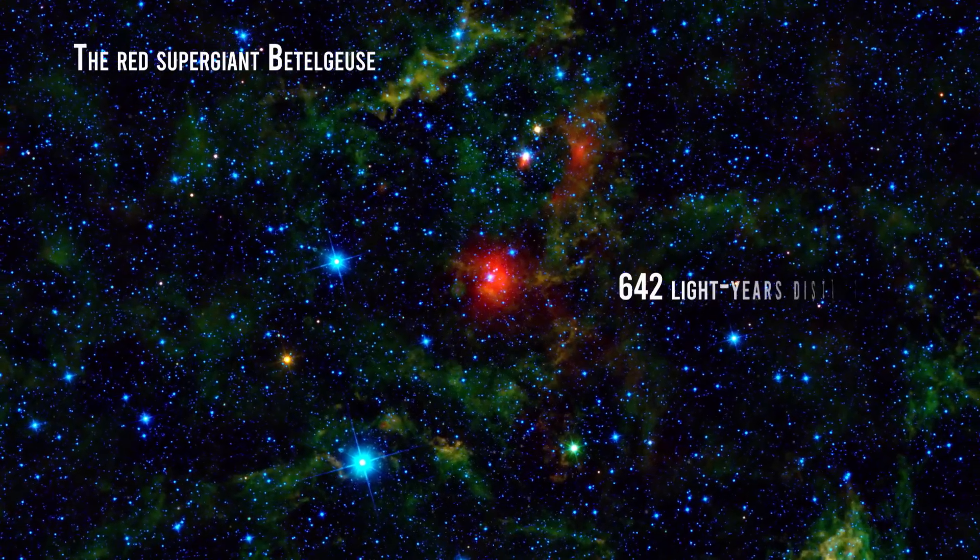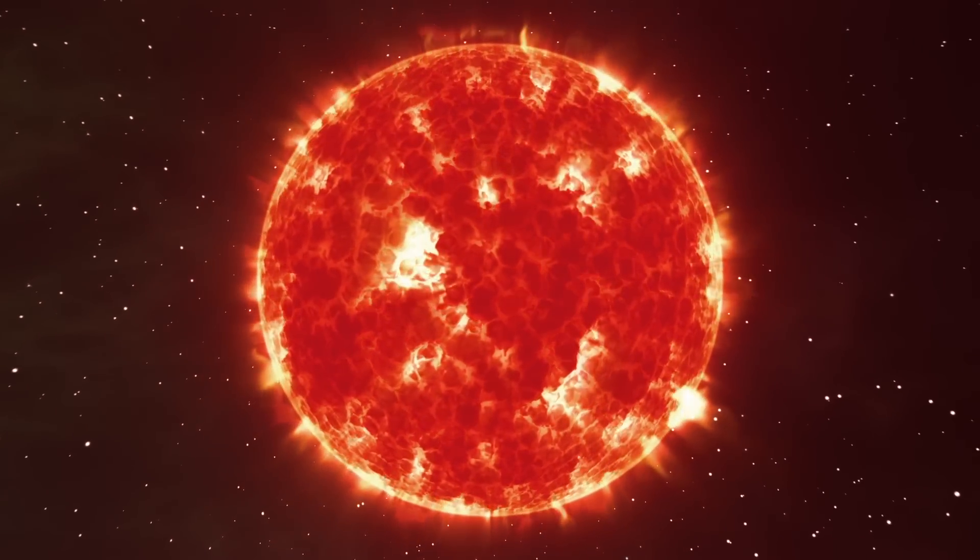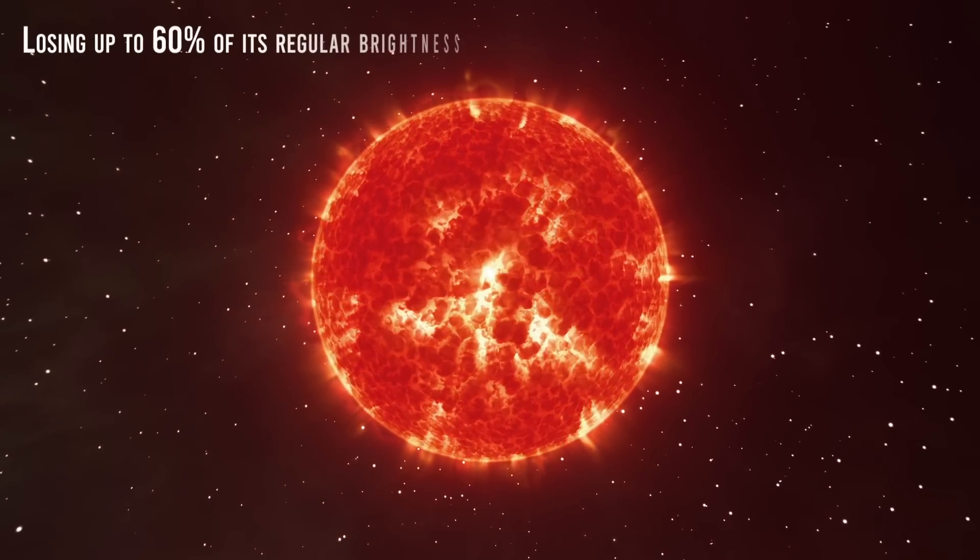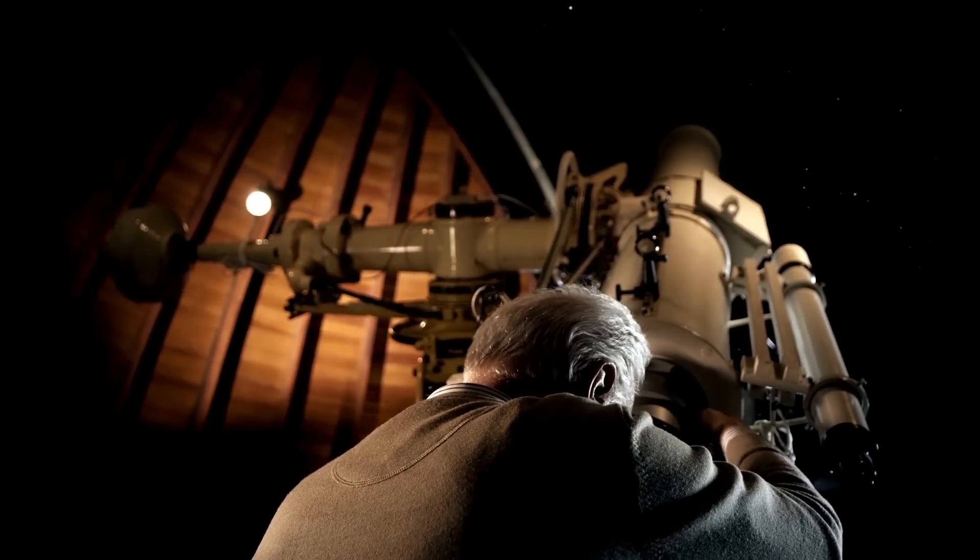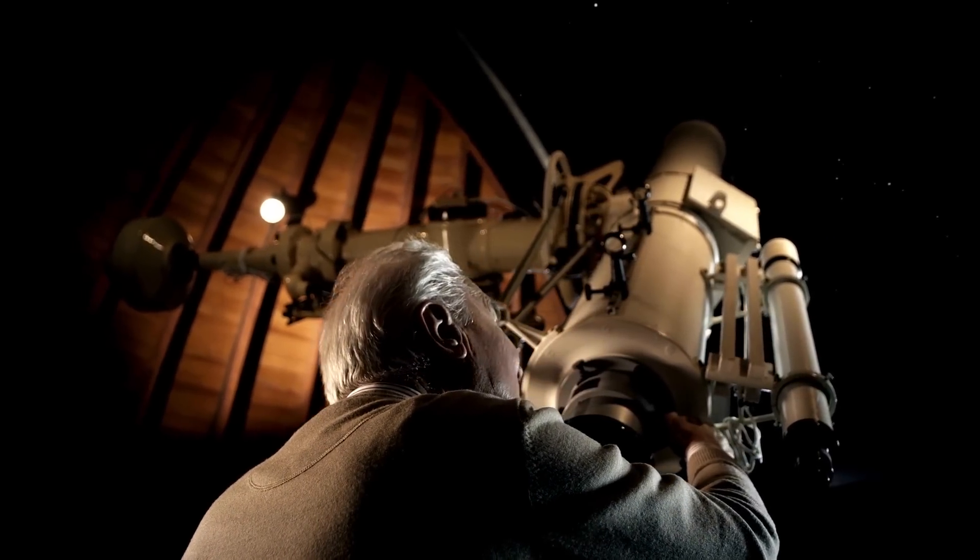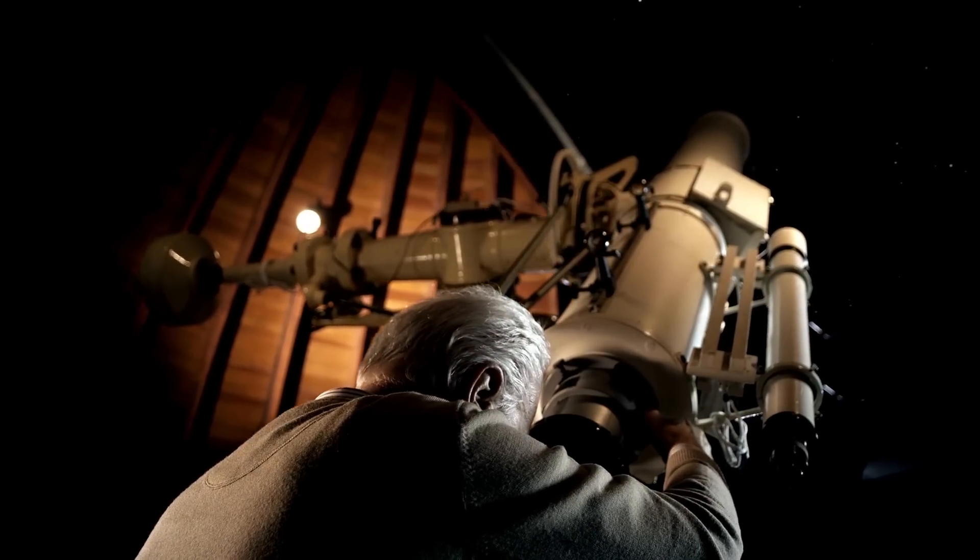The red supergiant Betelgeuse, 642 light years distant, inexplicably started to dim around the end of 2019, losing up to 60% of its regular brightness. Something really remarkable for a star that is among the 10 brightest visible from Earth and had led scientists to assume that its supernova explosion is near.